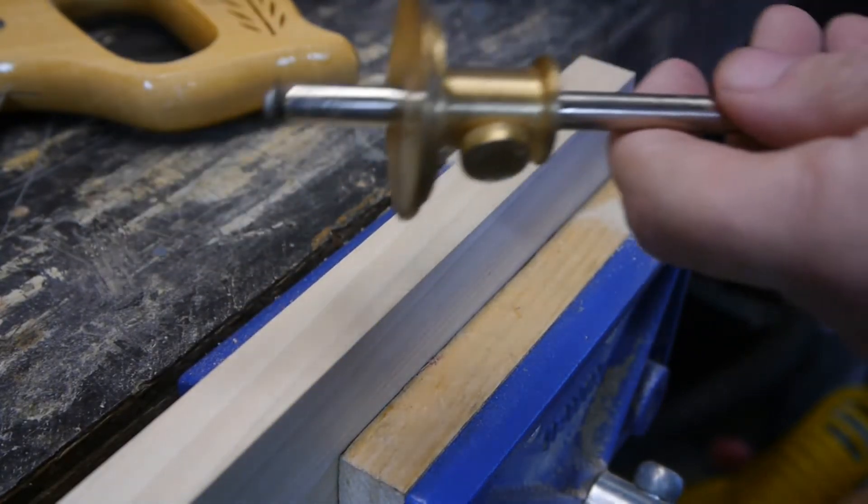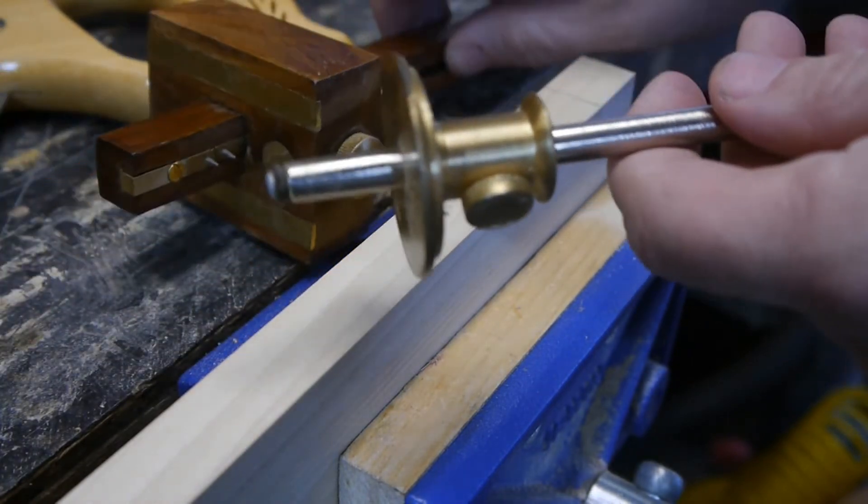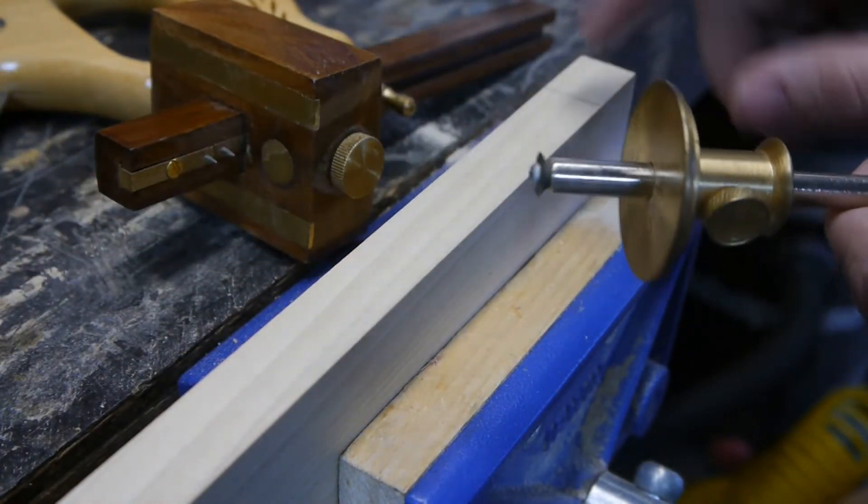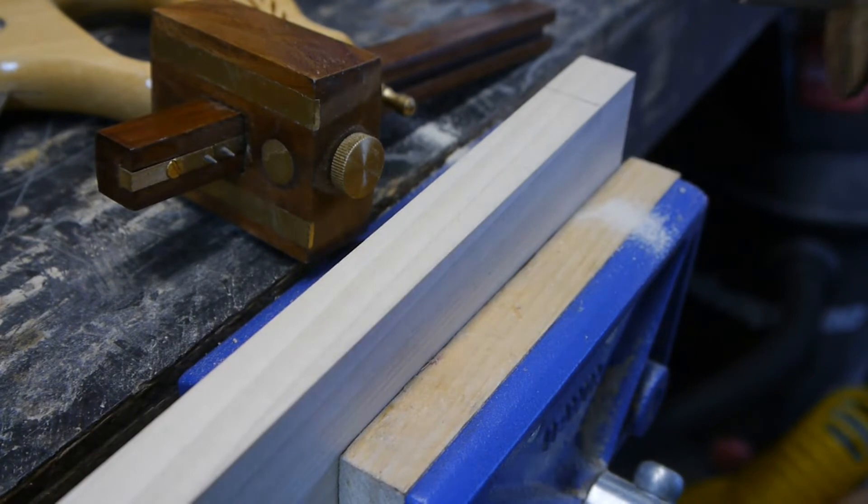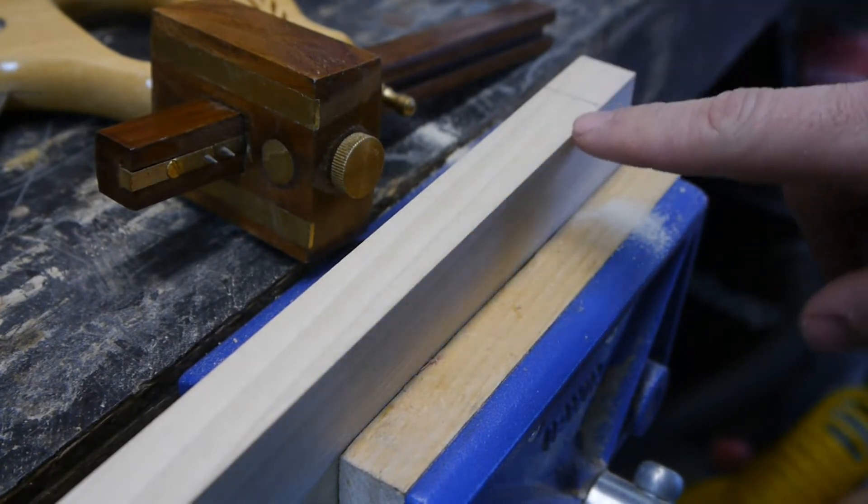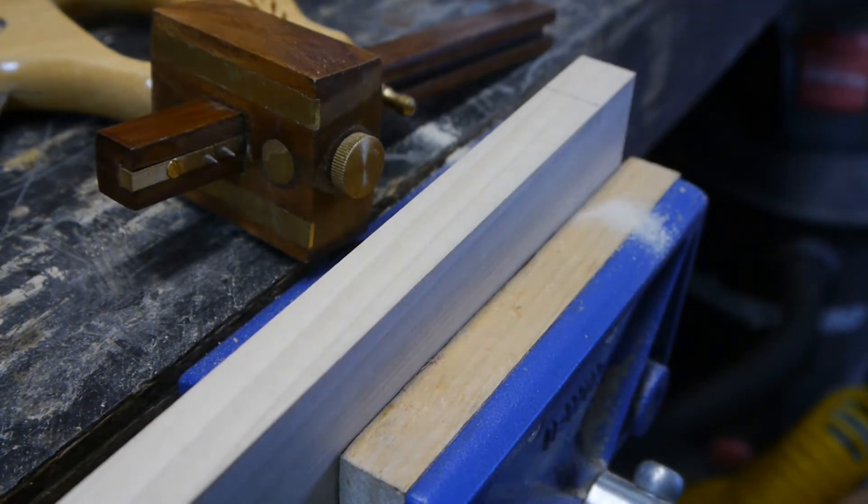I used two marking gauges to lay out this tenon, and it leaves a little knife line. What I did is I drew a pencil line right here so you might be able to see what I'm doing a little bit better. Let me zoom in a little bit here.